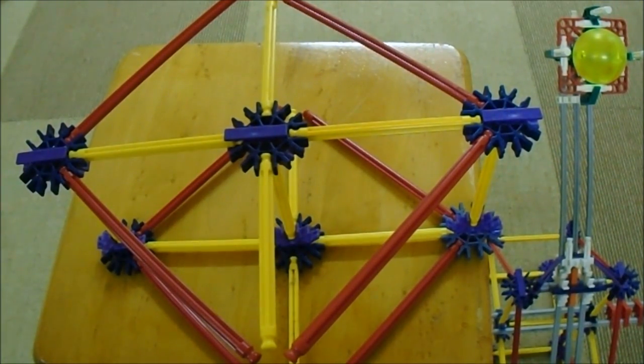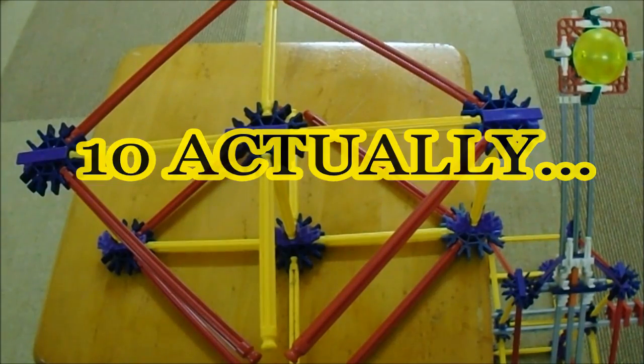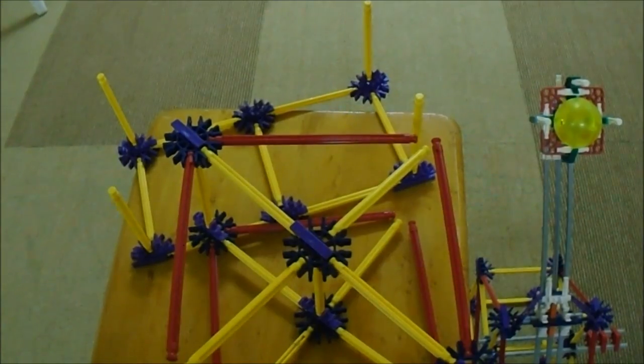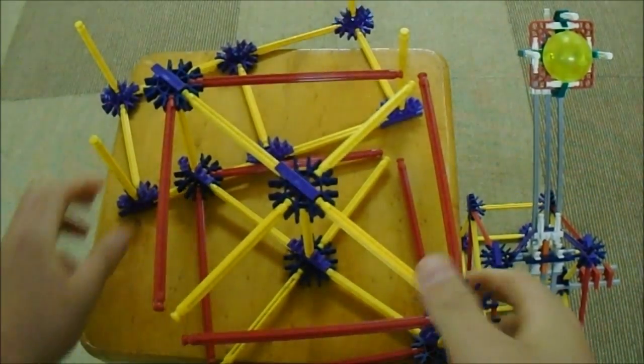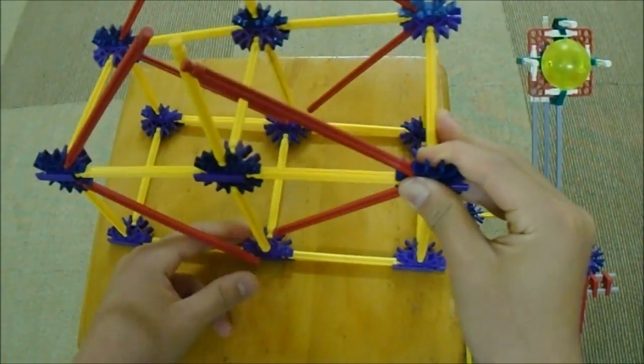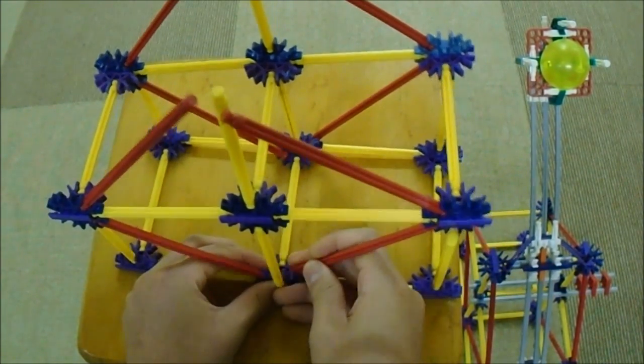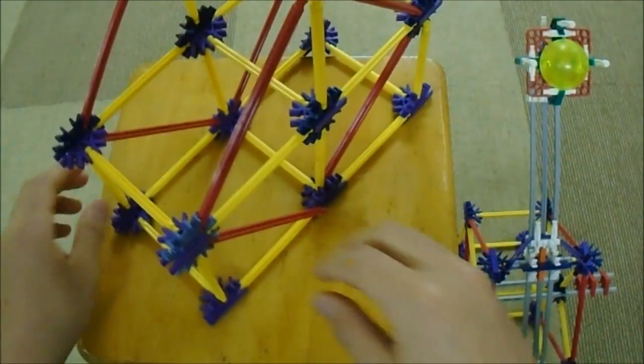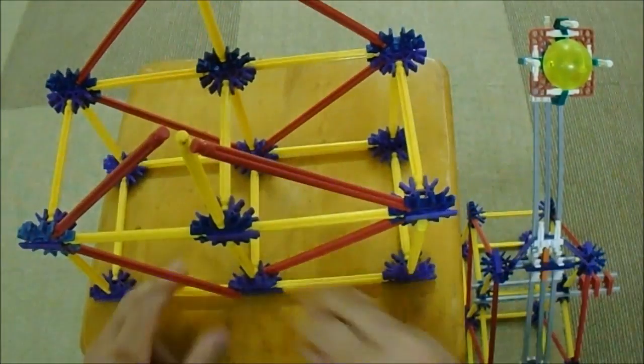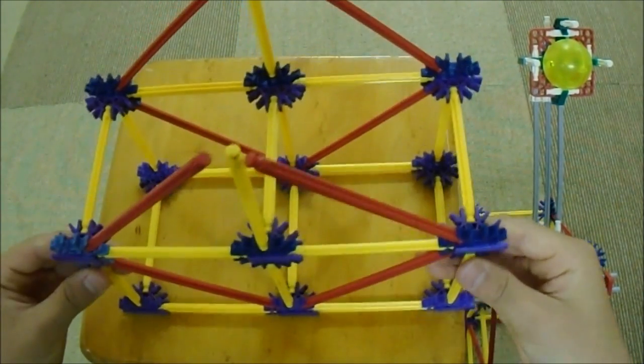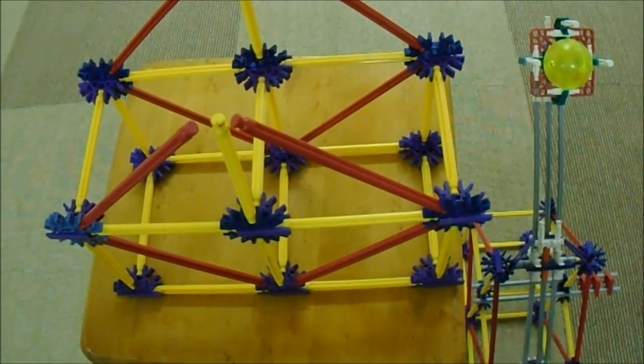There's eight red rods, eight yellow rods, and six of these 3D pieces. Finally, you'll just want to connect them like this. On both sides. You'll want to connect them on both sides. And there, the structure's done.